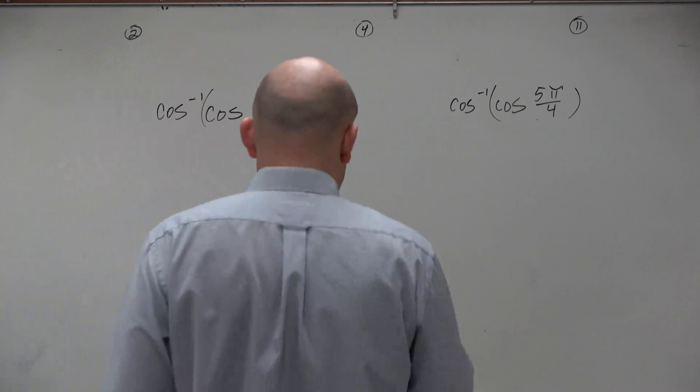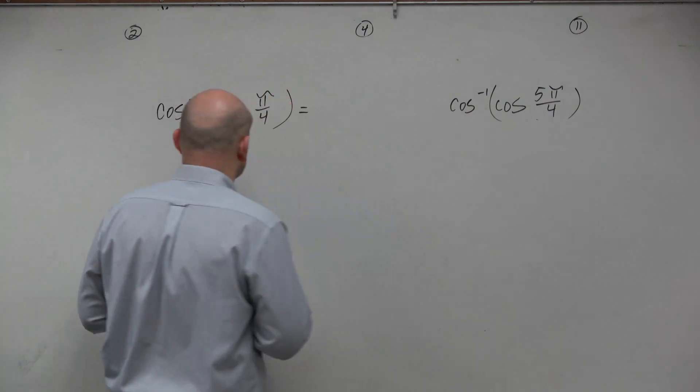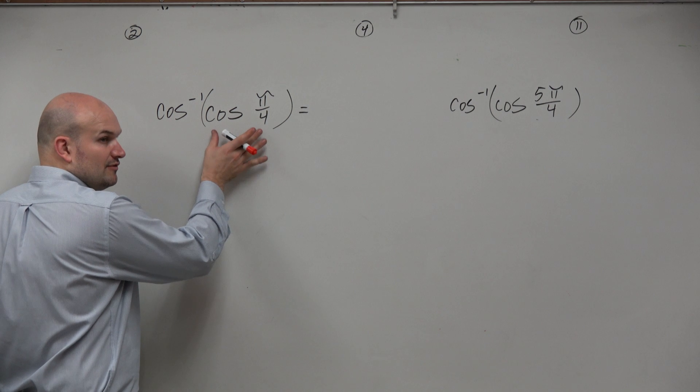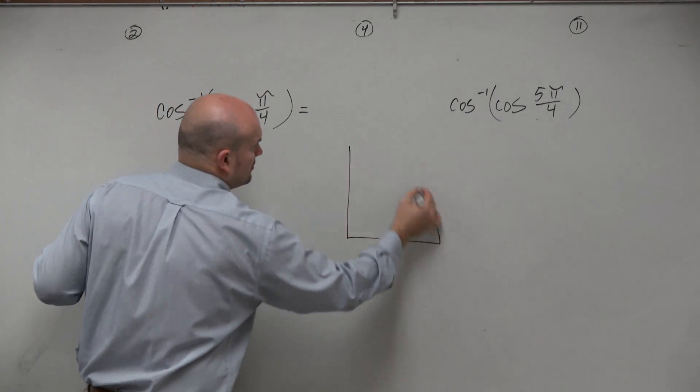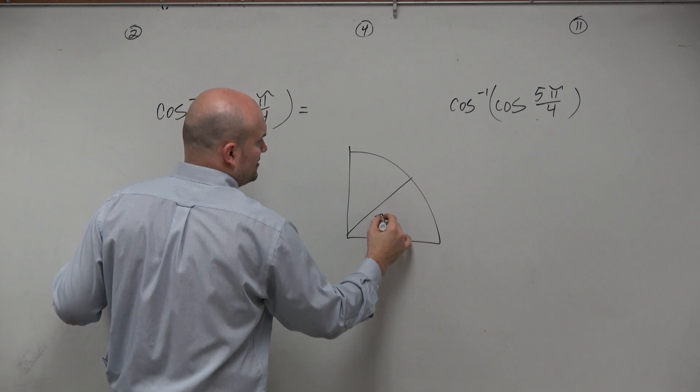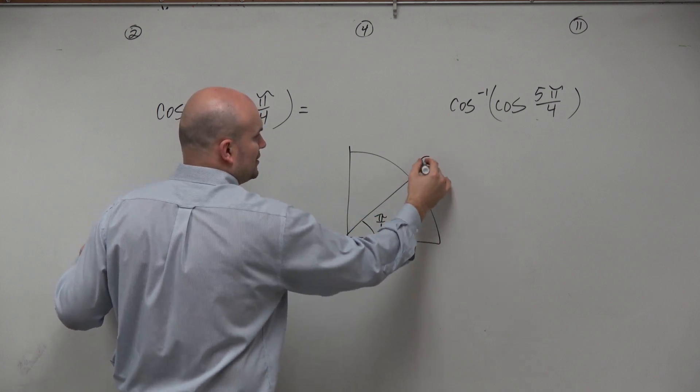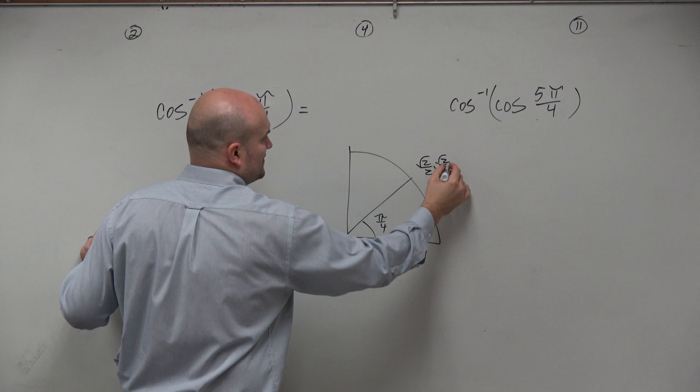In this example, all we simply want to do when you're doing composition of inverse functions is just evaluate from the inside out. So evaluate cosine of pi over 4. Well, cosine of pi over 4 is right here. Since I know my unit circle, I know that's square root of 2 over 2, comma square root of 2 over 2.